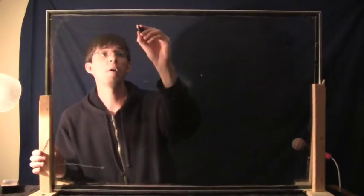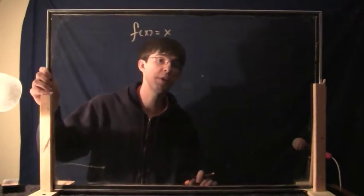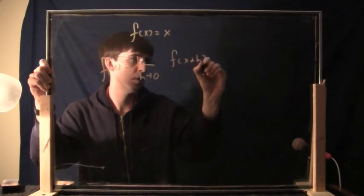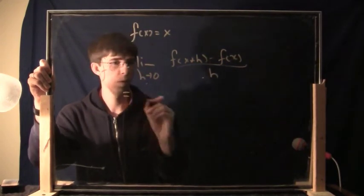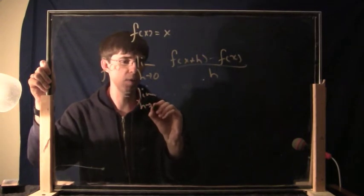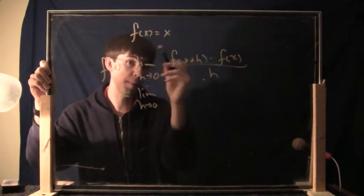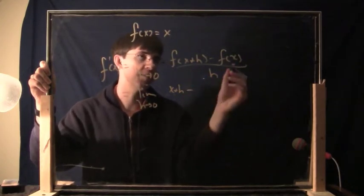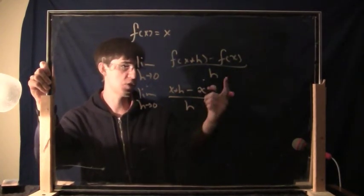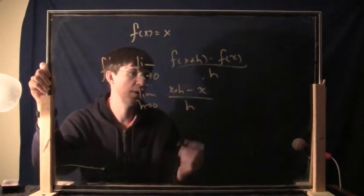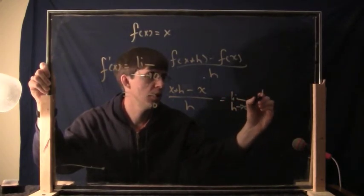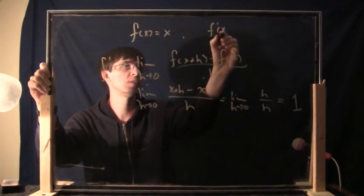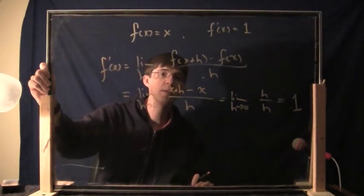Let's try another simple function: f(x) equals x. Plug everything in — what is f(x+h) now? You replace x by x+h, so the answer is x+h. Then minus f(x), which is x, divided by h. You can cancel the x's, and what remains is just limit as h goes to 0 of h over h, which gives you 1. So if f(x) equals x, then f prime of x equals 1. The derivative of x is 1.